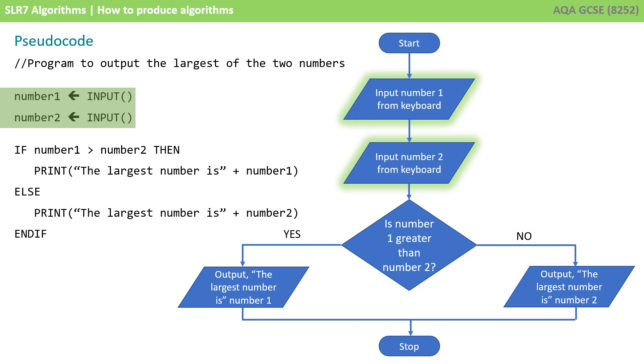So, in this example, we're inputting our two numbers. And we're saying, if number 1 is greater than number 2, then print the largest number is number 1. Otherwise, print the largest number is number 2. And then end. So, it's exactly the same algorithm that we saw in the flowchart, it's just represented in a different way.